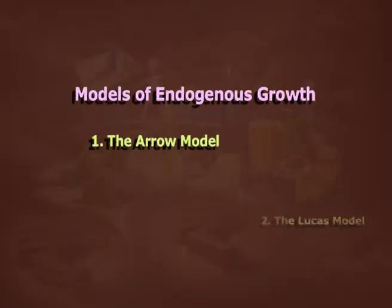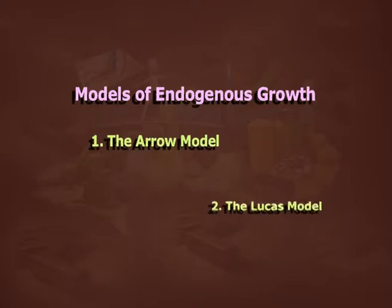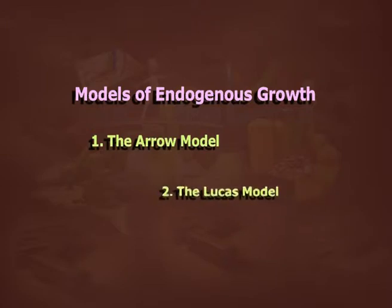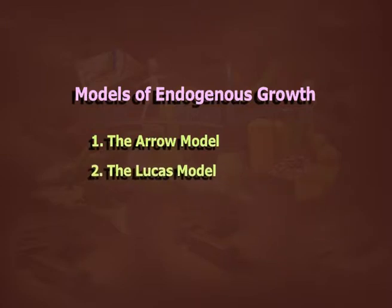Arrow showed that if the stock of labor is held constant, growth ultimately comes to a halt because socially very little is invested and produced. Therefore, Arrow did not explain that his model could lead to sustained endogenous growth.